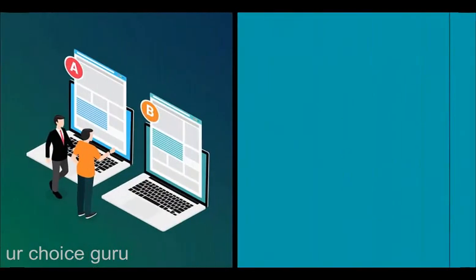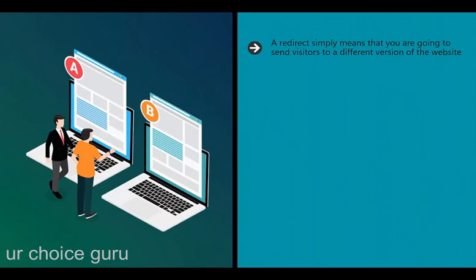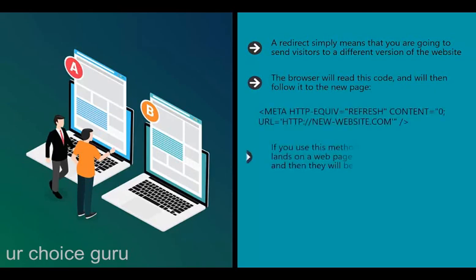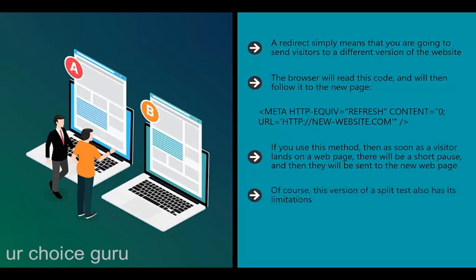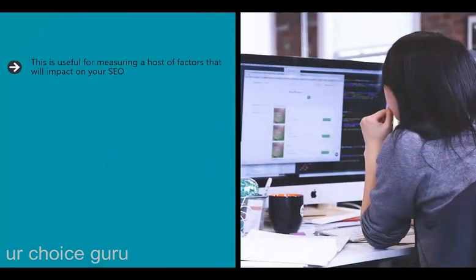One of the simplest redirects is the HTML redirect - the browser reads this code and follows it to the new page. However, this version of a split test has its limitations. There's no way for Google to alter its ranking depending on which page performs best, because the two versions are one and the same as far as Google is concerned, meaning they will only rank once. This method is useful for measuring factors that impact SEO - things like bounce rates, CTR (click-through rate), and more - which can have a big effect on your ranking.